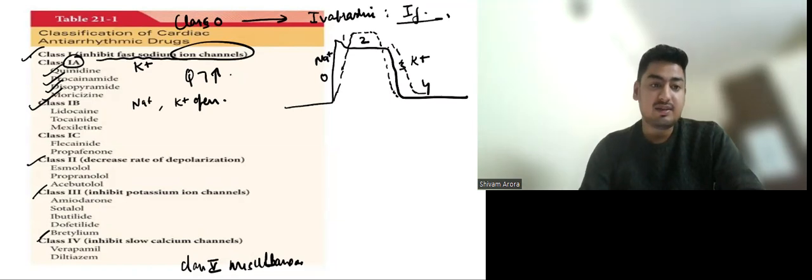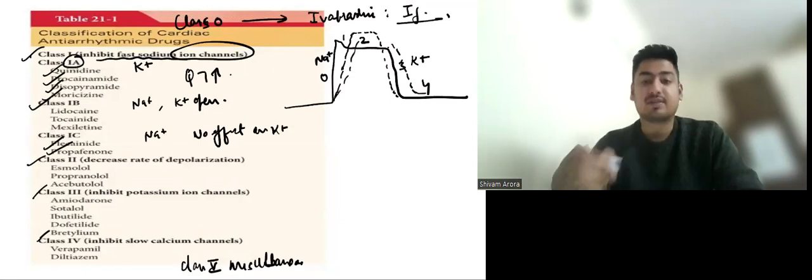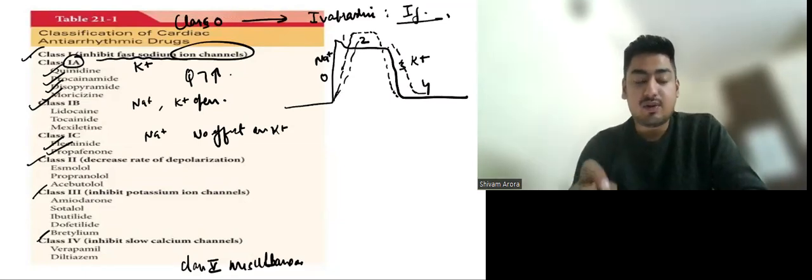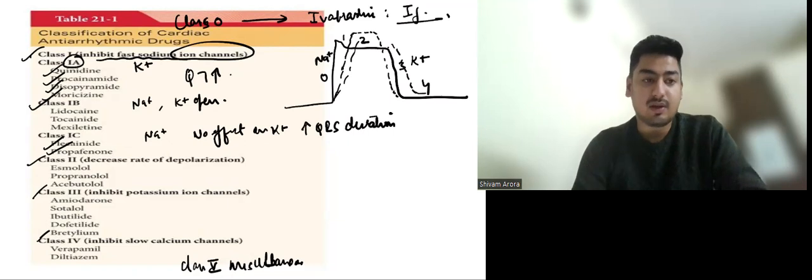Then in class 1C agent, we have Flecainide, Encainide and Propafenone. They will block sodium channel, but have no effect on potassium. So they will delay depolarization, but they are the strongest sodium channel blocker. So they will delay depolarization a lot. So they will increase QRS duration.